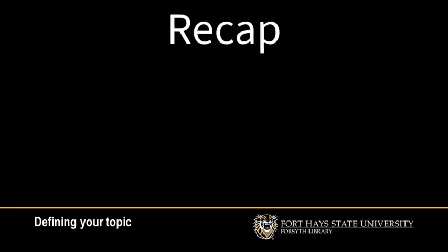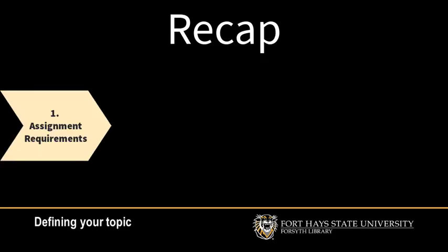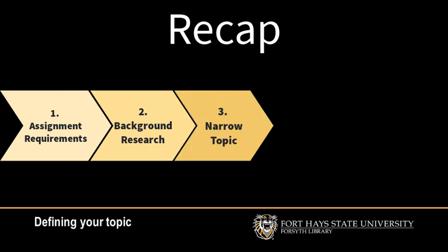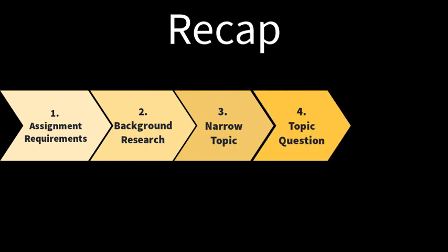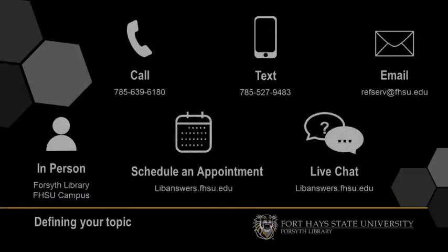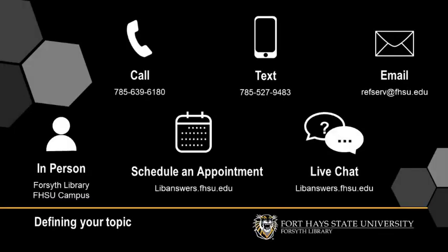As a quick recap, when coming up with a topic, there are 5 steps you should take: 1. Figure out the requirements of the assignment. 2. Do background research. 3. Narrow your topic by asking the 5W questions. 4. Draft your topic question. And finally, re-read the assignment to make sure you are meeting all of the requirements with your topic. If you still have questions about generating a topic, you can get in contact with us through Ask a Librarian.